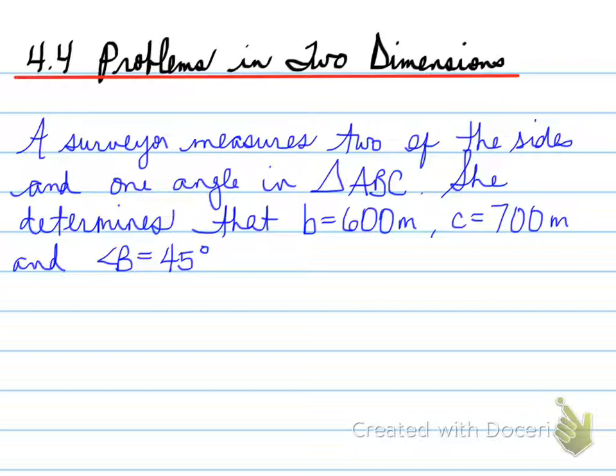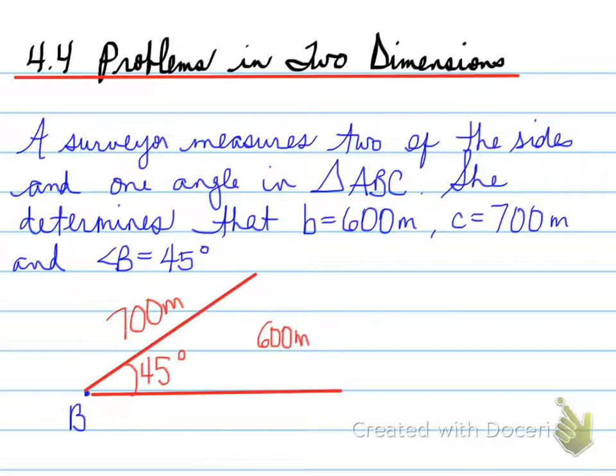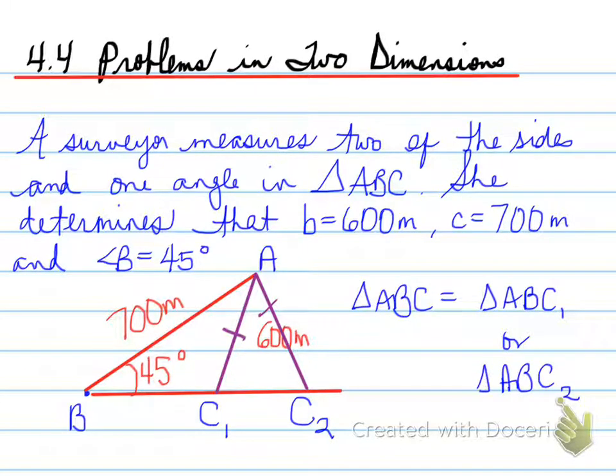Once we know this information, we have to determine how many triangles can be drawn. In this situation, we have an angle B which is 45 degrees, the side 700 meters which is adjacent to the 45 degrees, and finally the 600 meters drops from the side that's 700 meters, so that there are two possible sides. We need to look at how triangle ABC has the possibilities of triangle ABC1 and or triangle ABC2.